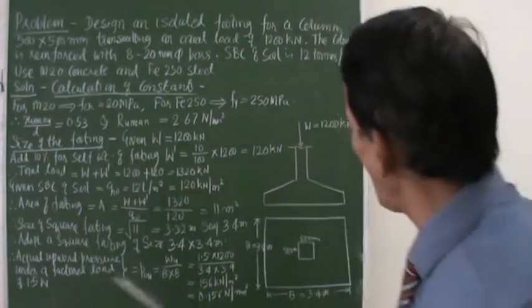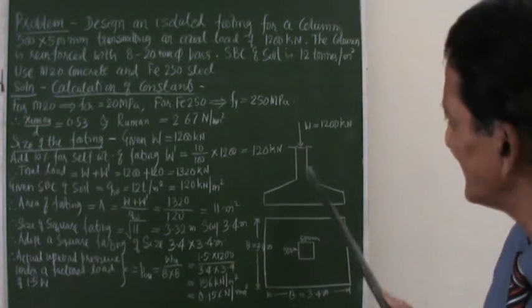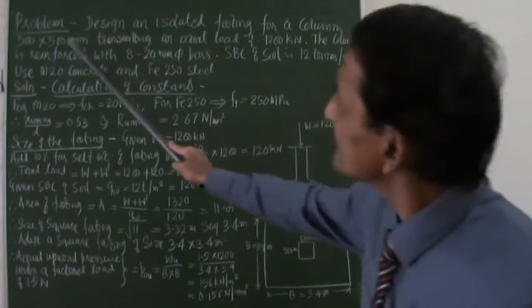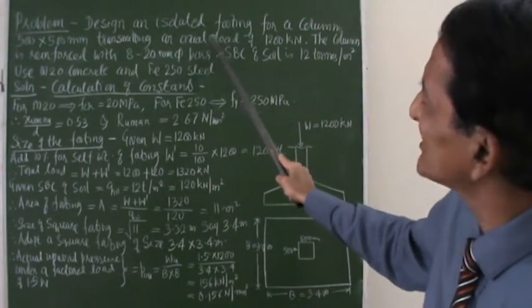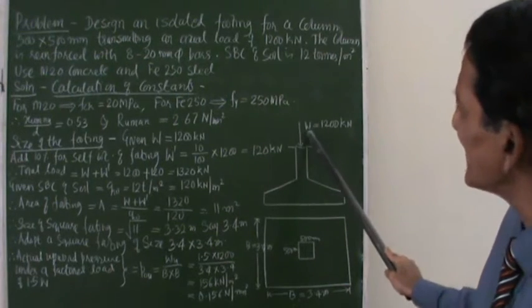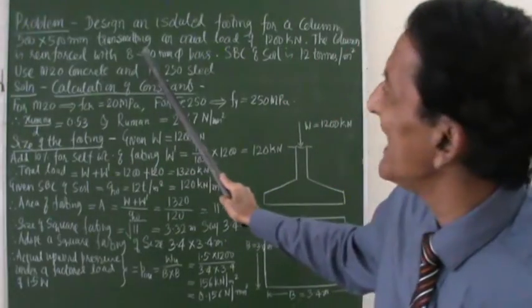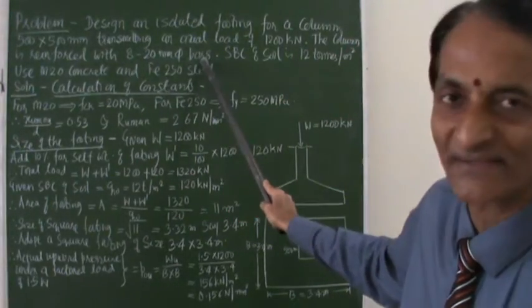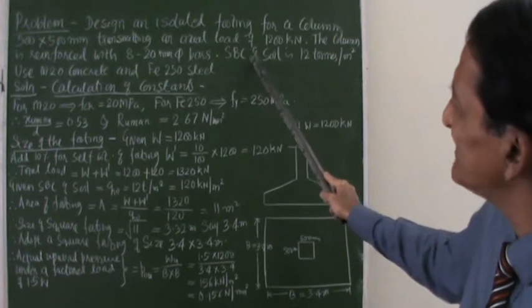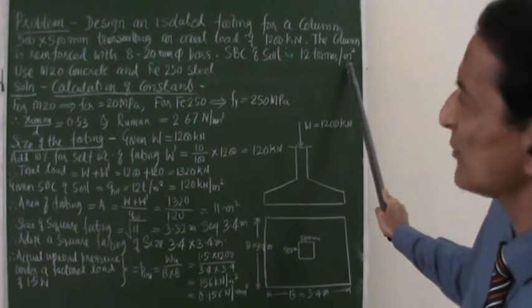You have got a column here, 500 by 500 dimension given. This dimension is 500, this dimension is 500. It is transmitting an axial load of 1200 kilonewton. The column is reinforced with 8 bars of 25mm diameter. The SBC of soil is 120 kilonewton per meter square.